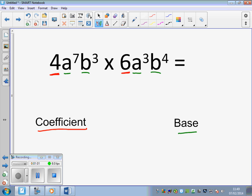Our question to be answered today is how do we multiply these two terms? And the rules are actually very, very simple. We multiply the coefficients. 4 multiplied by 6 is 24.